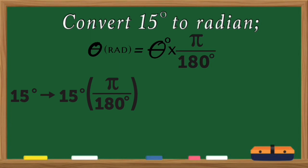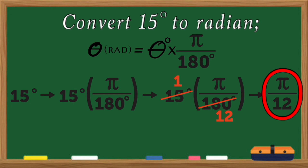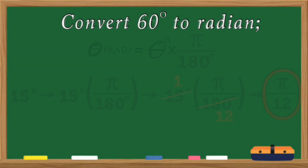In finding the GCF, I have attached another video here for your reference. Since the GCF of 15 and 180 is 15, we divide them: 15 divided by 15 is 1, and 180 divided by 15 is 12. We now have pi over 12. Therefore, 15 degrees is equal to pi over 12. Let us have another example — the given is 60 degrees; to convert it into radian, multiply 60 by pi over 180 degrees.